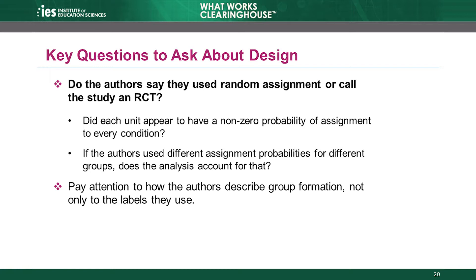If the answer is yes, then check to see whether each unit appears to have had a non-zero probability of assignment to each condition. Then determine whether the authors used different assignment probabilities for different groups. If so, does the analysis account for that?